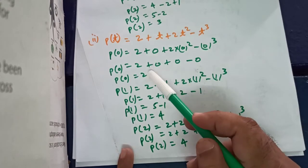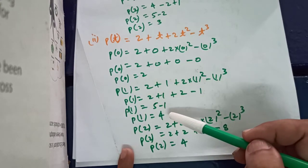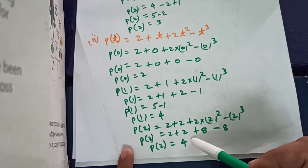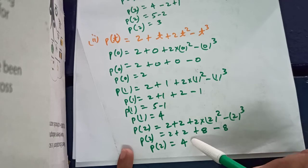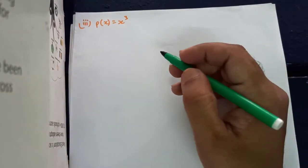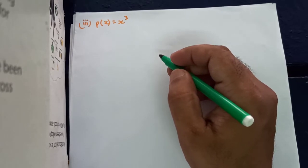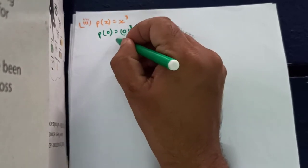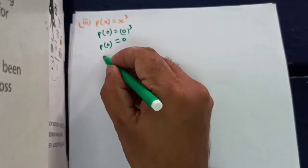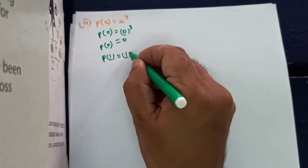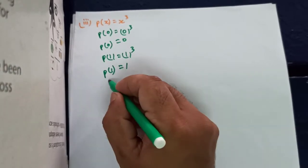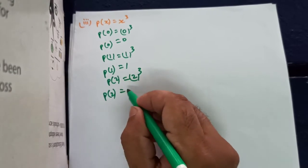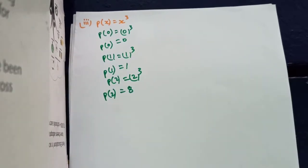So for p(t): p(0) is 2, p(1) equals 4, and p(2) is also 4. Next, for the polynomial p(x) equals x cubed: p(0) is cube of 0, which is 0. p(1) is cube of 1, which is 1. And p(2) is cube of 2, which is equal to 8.